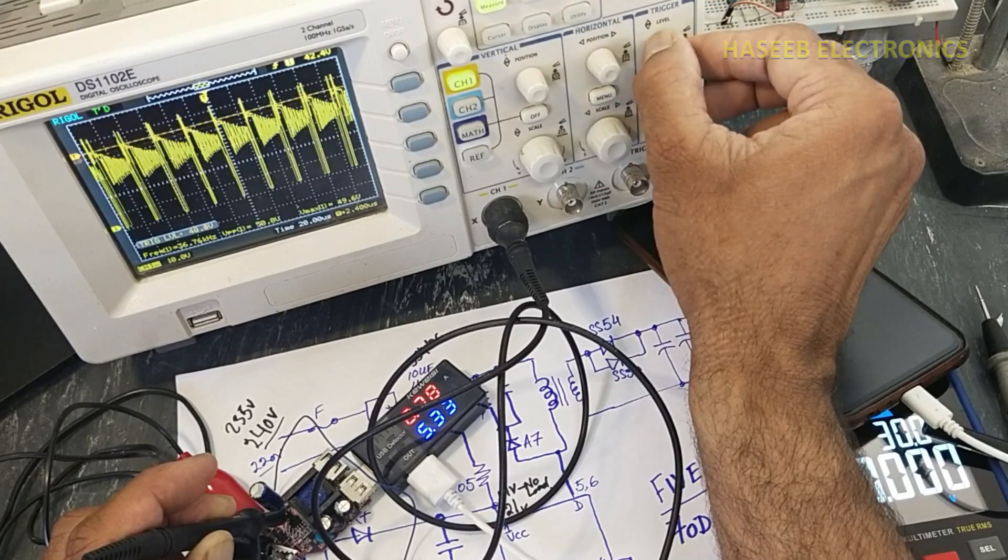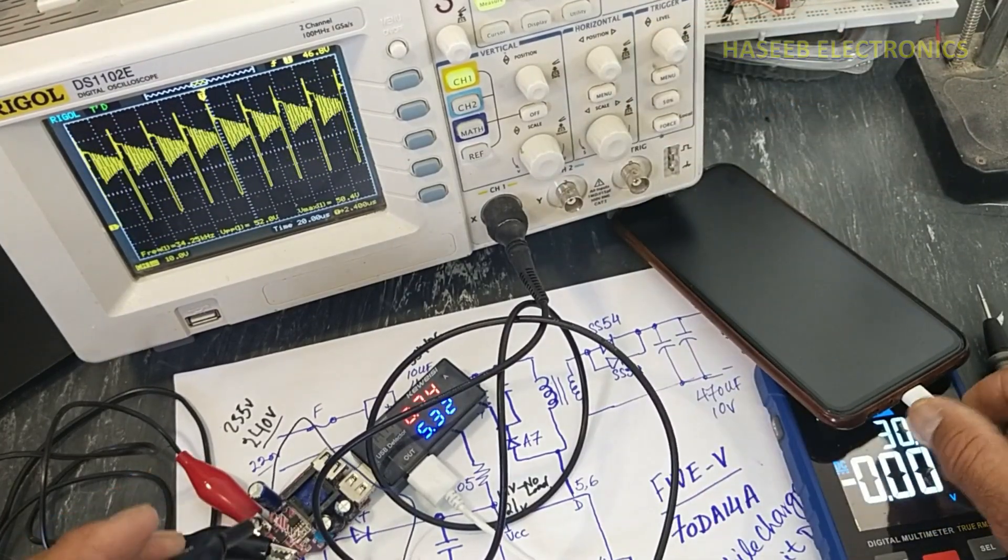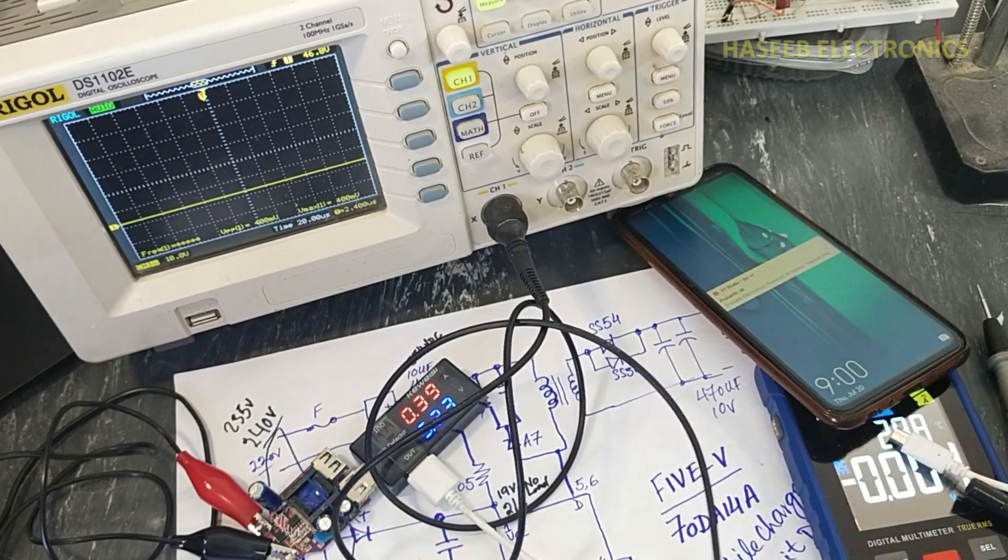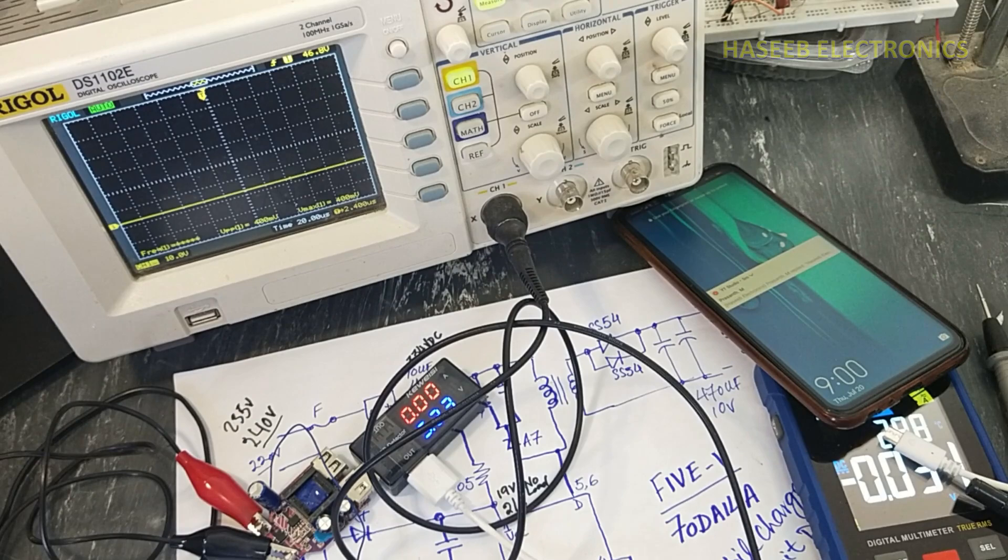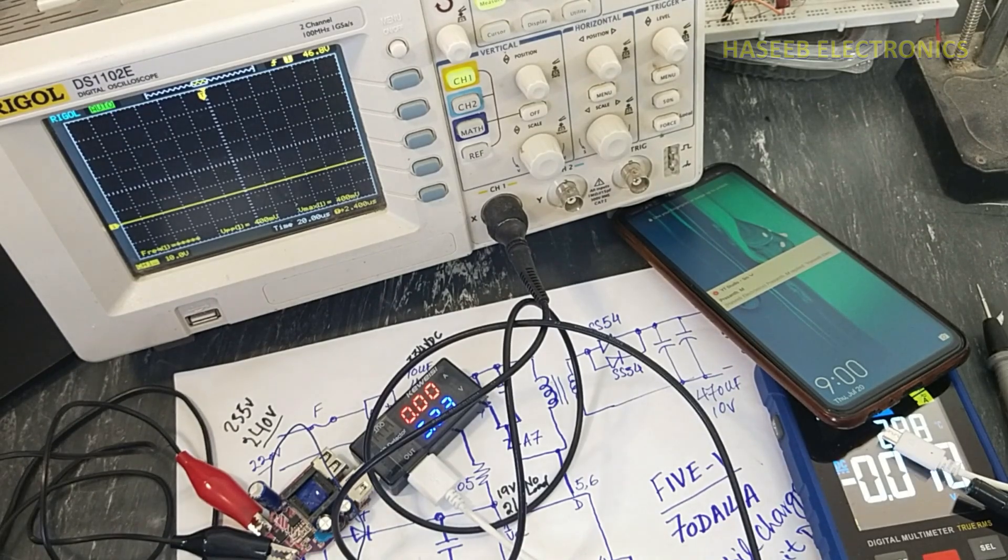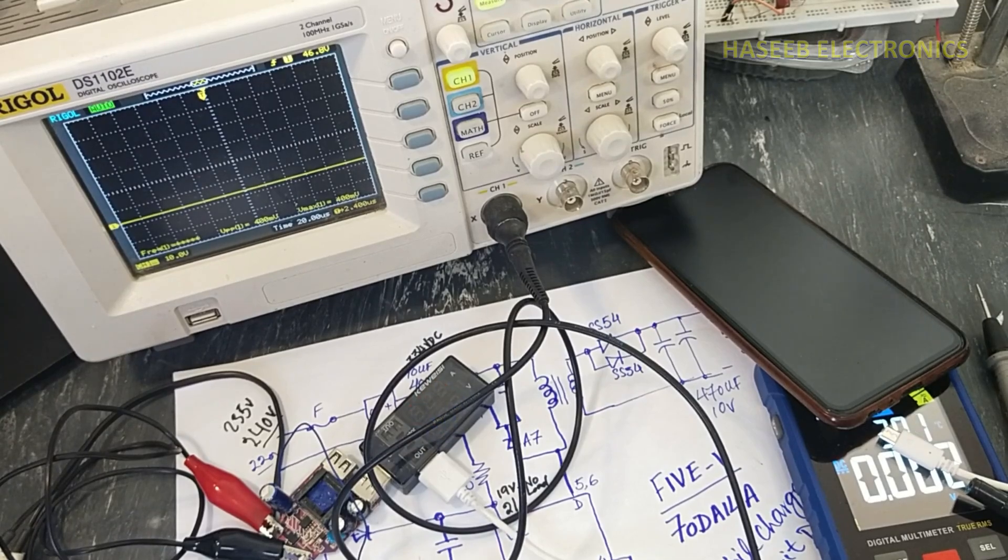But when we will put the load, at that time it will maintain its frequency at 37 kilohertz. So in this way we can verify the function of this IC. I hope this video is informative. If it is good, hit the like button. If you have any question, please write in the comments. Thanks for watching. Assalamu alaikum warahmatullahi wabarakatuh.